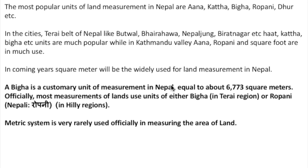In the Ropani system: one Ropani equals 16 Ana, 64 Paisa, and 256 Dham. One Ana equals 4 Paisa and 16 Dham. One Paisa equals 4 Dham, and one Dham equals 1.99 square meters.